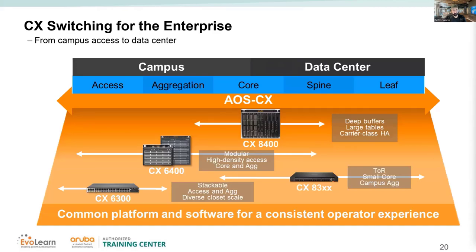Where you position a switch depends on how large and complex your network is. We have aggregation and access-layer switches, modular switches, fixed-port top-of-rack switches, and spine-and-leaf designs. The 6400 and 8400 serve as campus core as well as data center core or spine.